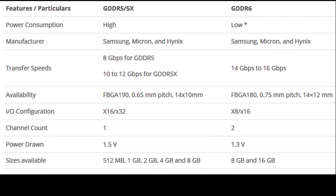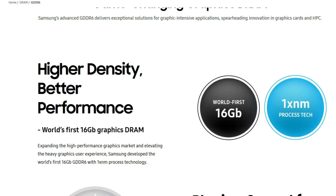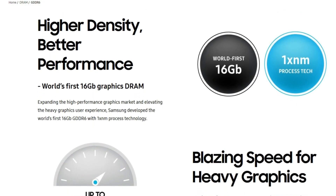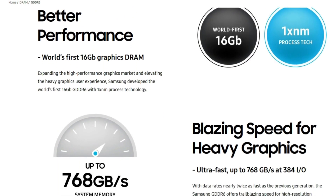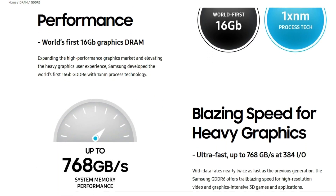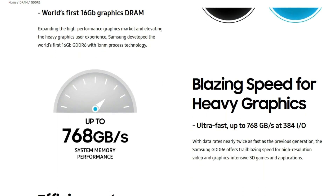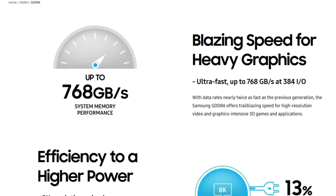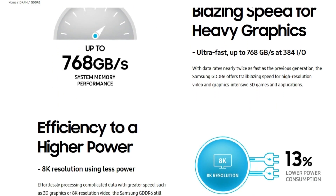The power consumption of GDDR6 would be around 1.35V, which is approximately 10% lower voltage than GDDR5 memory modules. GDDR6 offers increased per-pin bandwidth up to 16GB per second, which is almost twice the transfer speed of GDDR5. It is designed for use in graphic cards, game consoles, and even high-performance computation.